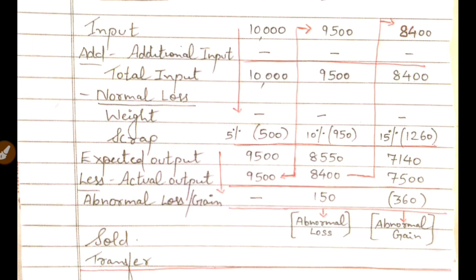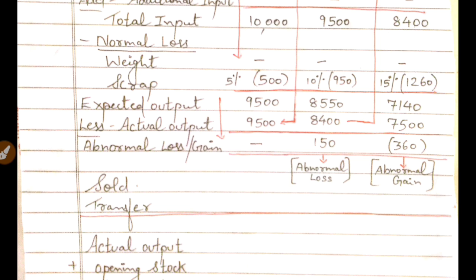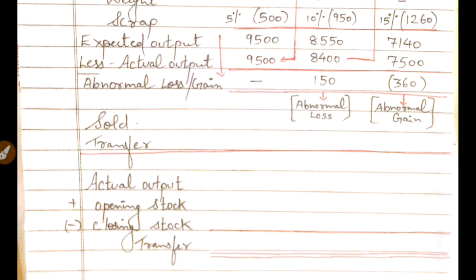This was a basic level of process costing — statement of units. If you make the statement of units first and then draw the process account, you will have all the answers for cross-verification. For abnormal loss, post on the credit side of the process account. For abnormal gain, post on the debit side. If there is a sold-or-transfer variety, write sold-or-transfer in the same format. The percentage is applied to the actual output — do not calculate using expected output.